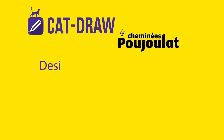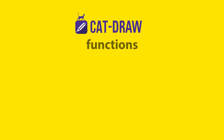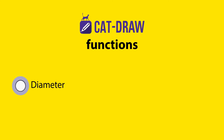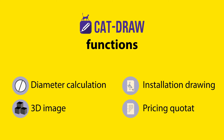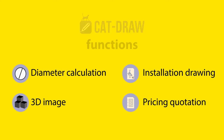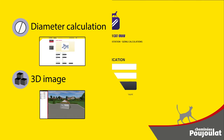CatDraw is the innovative tool of Cheminis Poujolat to plan and carry out a chimney installation. Very easy to use, CatDraw allows you to calculate the diameters of the flues online, to create a 3D model, and to obtain the building plans and the quotation immediately.